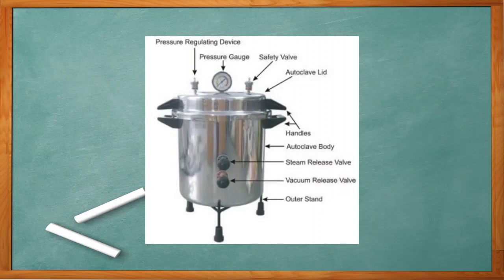This is a picture of a basic autoclave. Its components include a pressure-regulating device, pressure gauge, safety valve, autoclave lid, handles, autoclave body, steam release valve, vacuum release valve, and auto stand.